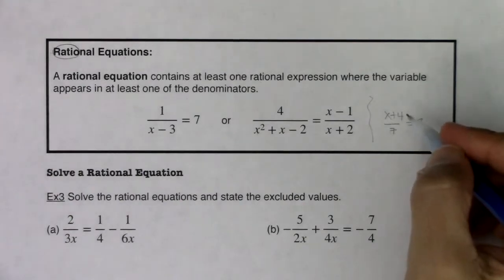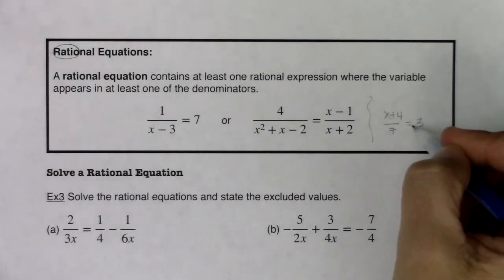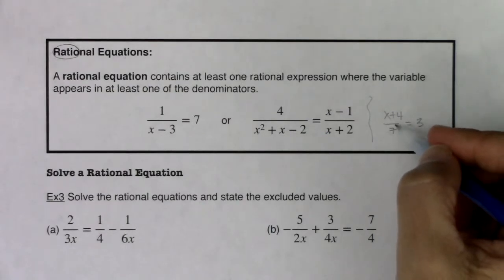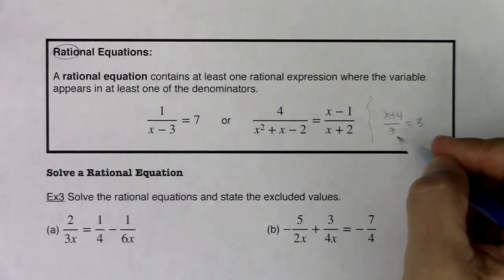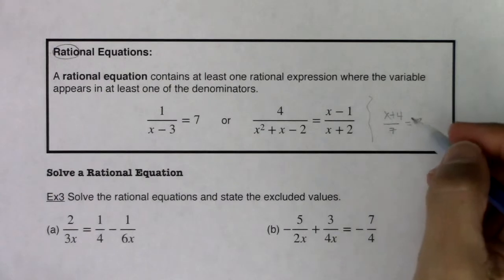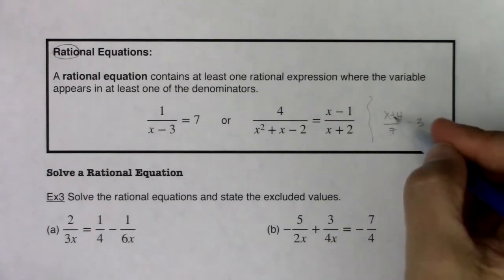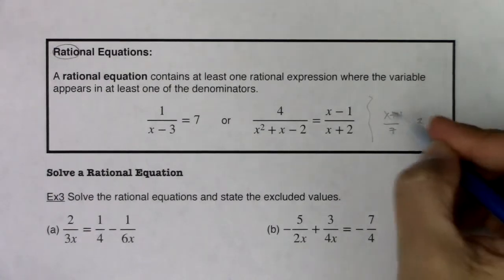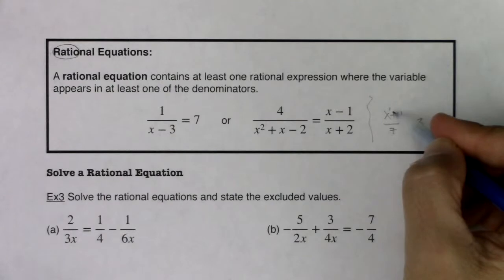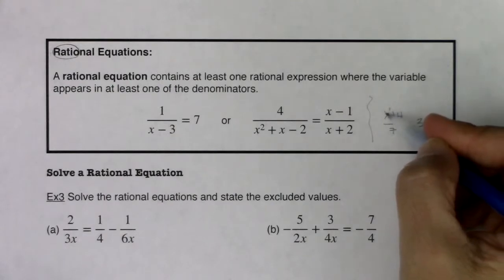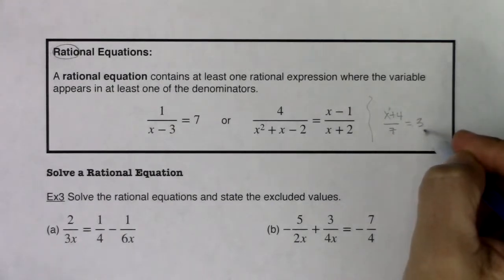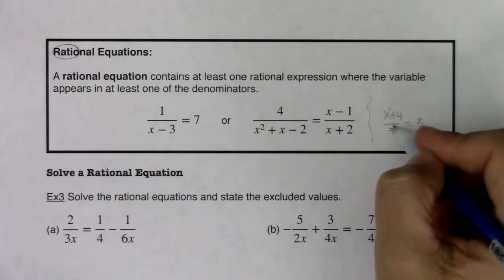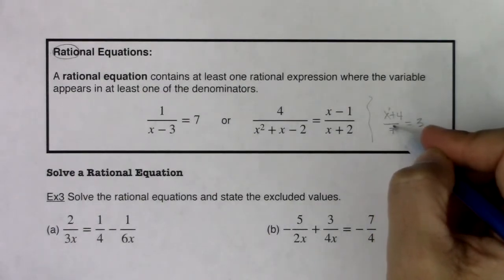You might say, why not? I see the fraction and I see the equal sign. Those are great points, but you need your variable to be in the denominator for it to actually qualify as a rational equation. This is actually a linear equation because x is just raised to the first power — this is one-seventh x plus four-sevenths equaling 3. So this is actually a linear equation, not a rational equation.